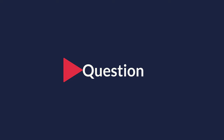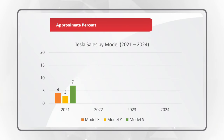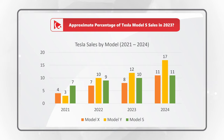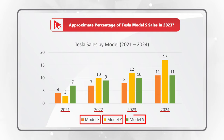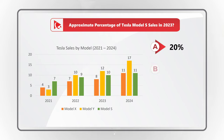Here is a very interesting question where you need to calculate the percentage of Tesla Model S sales in 2023. You are presented with a bar chart showing sales for 2021, 2022, 2023, and 2024. Each section has sales for Model X, Model Y, and Model S. You need to determine which number is correct out of four choices: A. 20%, B. 27%, C. 33%, and D. 40%.